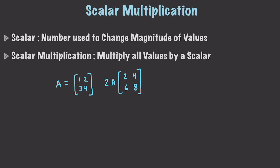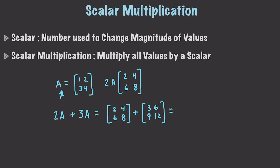In situations where we have 2A plus 3A, you just need to follow the order of operations and always multiply first and then sum the results. So 2A gives you 2, 4, 6, and 8, and 3A gives you 3, 6, 9, and 12. Then you add those matrices together to get the values of 5, 10, 15, and 20. That is scalar multiplication. Now prepare yourself because multiplying matrices is a lot more complicated.